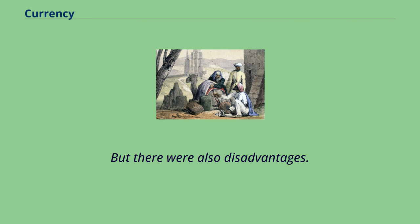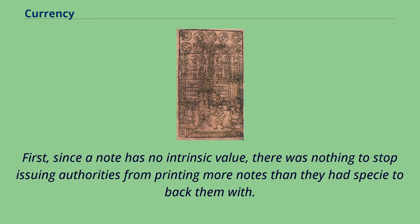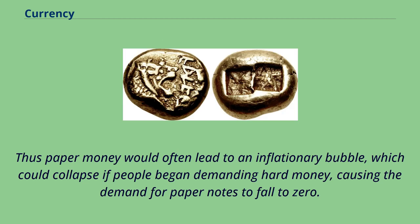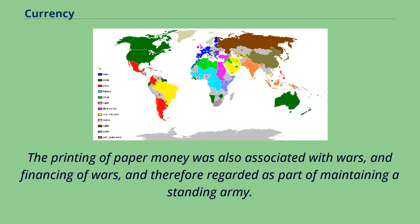But there were also disadvantages. First, since a note has no intrinsic value, there was nothing to stop issuing authorities from printing more notes than they had specie to back them with. Second, because it increased the money supply, it increased inflationary pressures, a fact observed by David Hume in the 18th century. Thus paper money would often lead to an inflationary bubble, which could collapse if people began demanding hard money, causing the demand for paper notes to fall to zero. The printing of paper money was also associated with wars and financing of wars, and therefore regarded as part of maintaining a standing army.